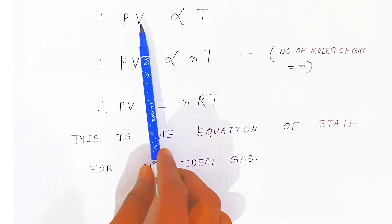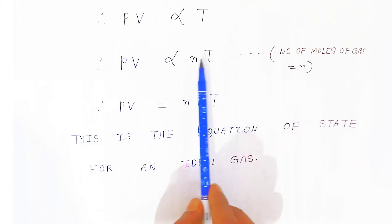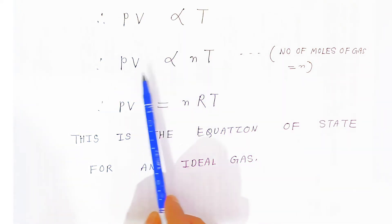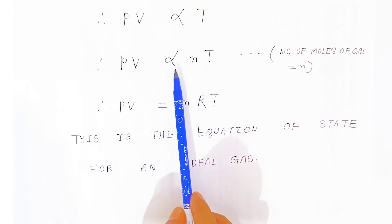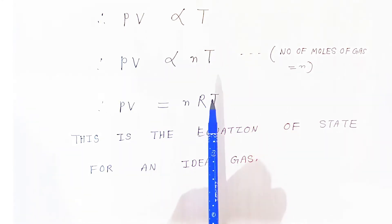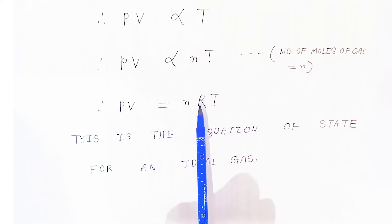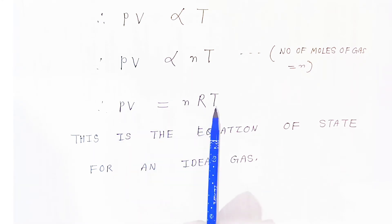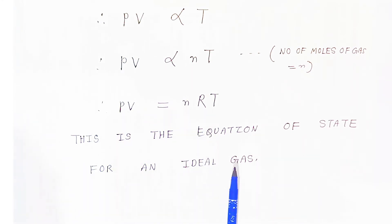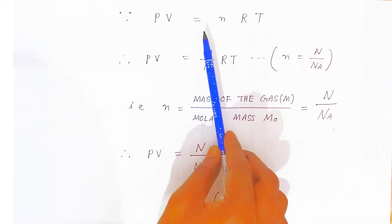When we consider n number of moles of gas, the product of pressure and volume is also directly proportional to nT. To remove the proportionality, we introduce the gas constant R, giving us PV = nRT. This is the equation of state of an ideal gas — a very important equation.